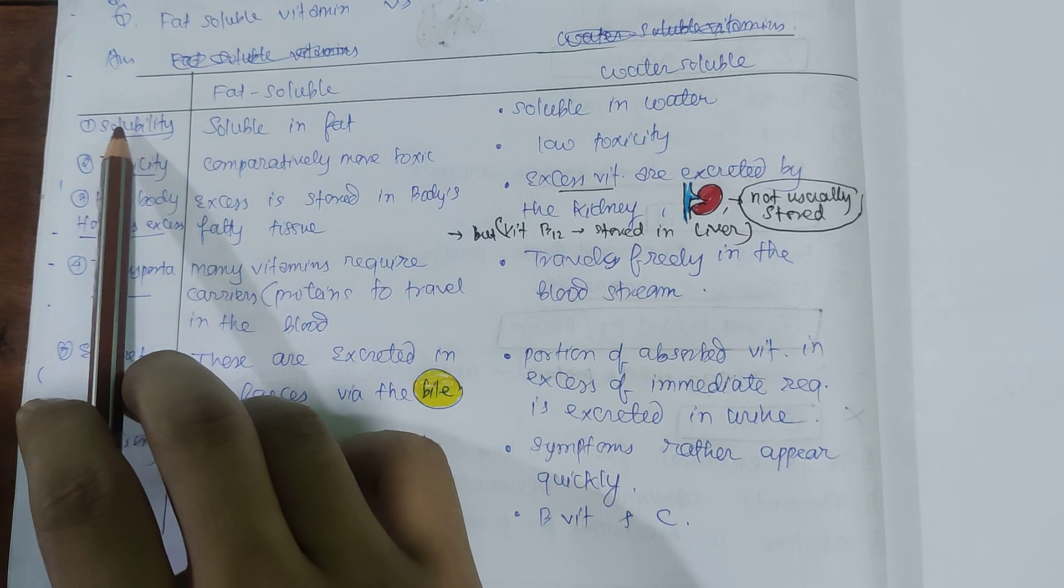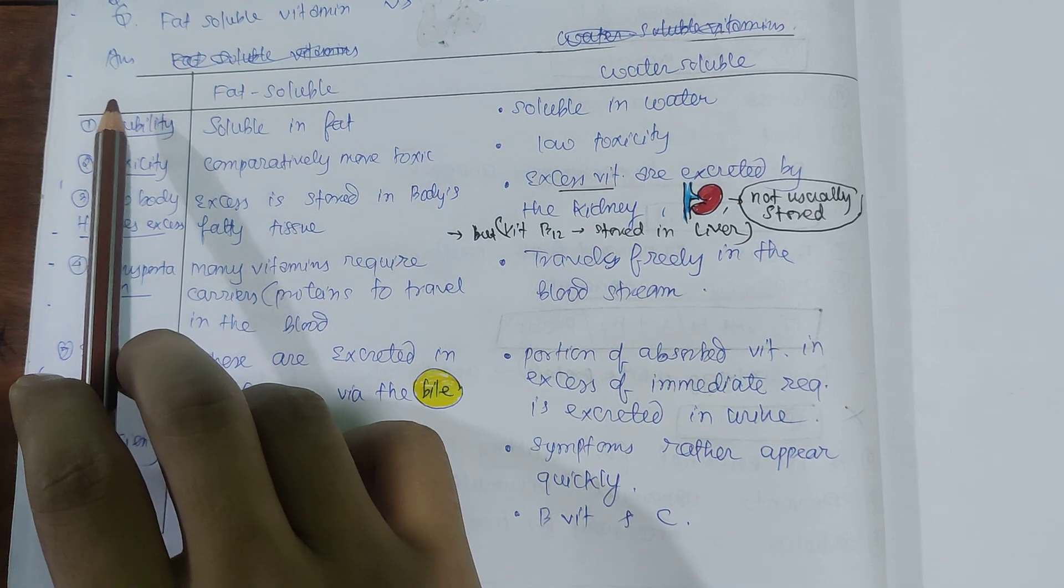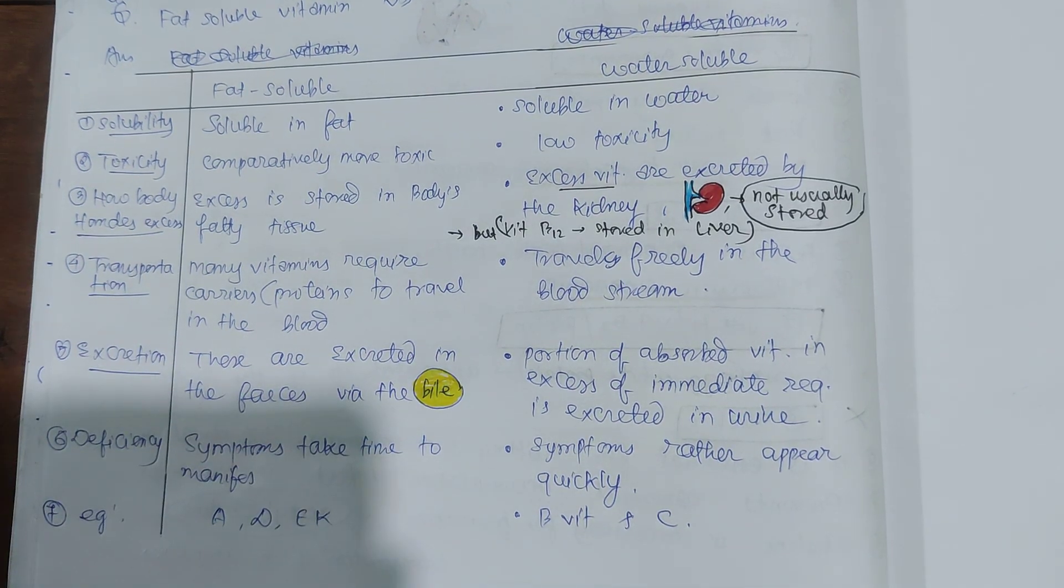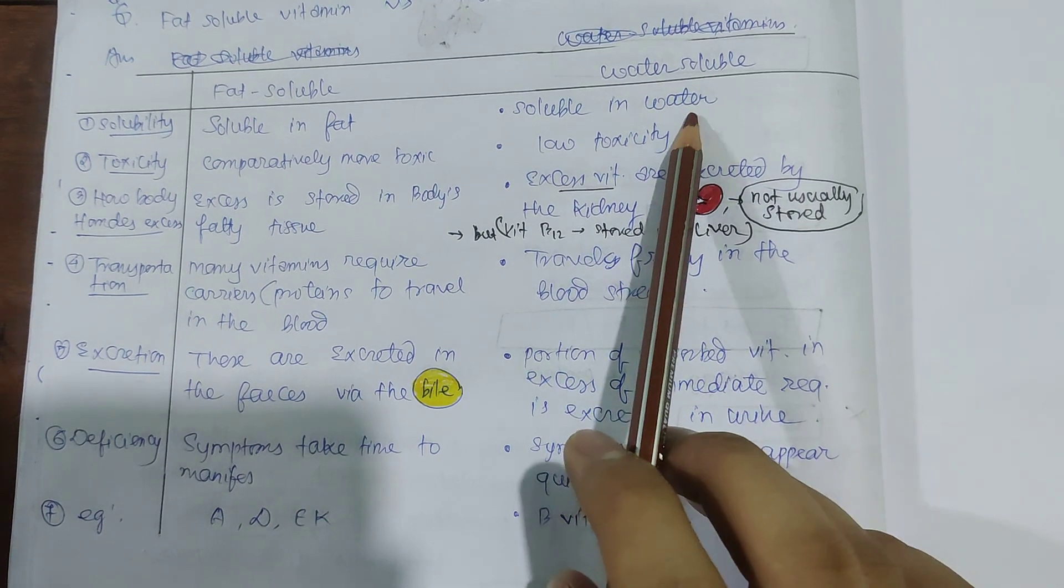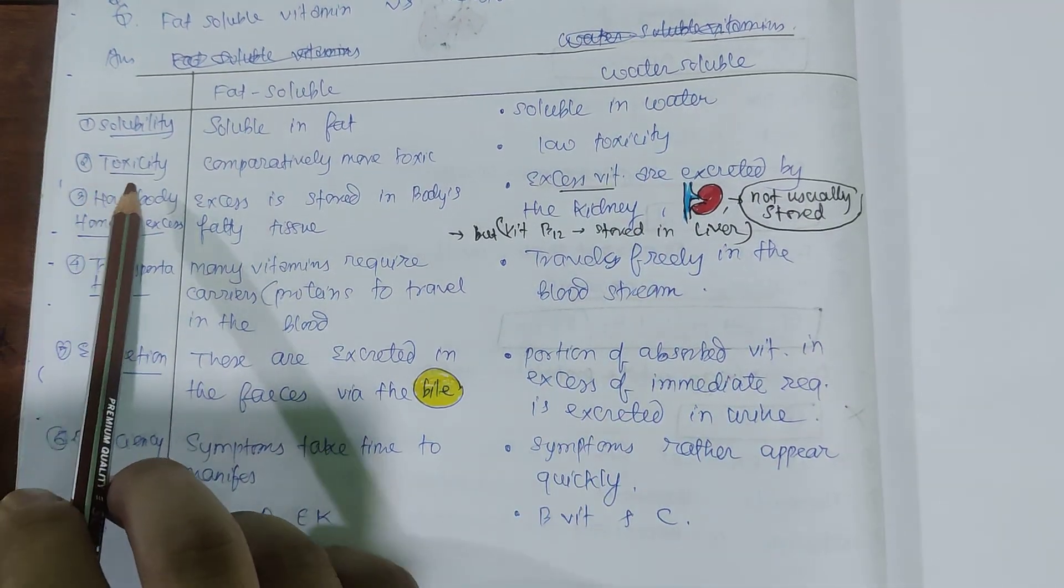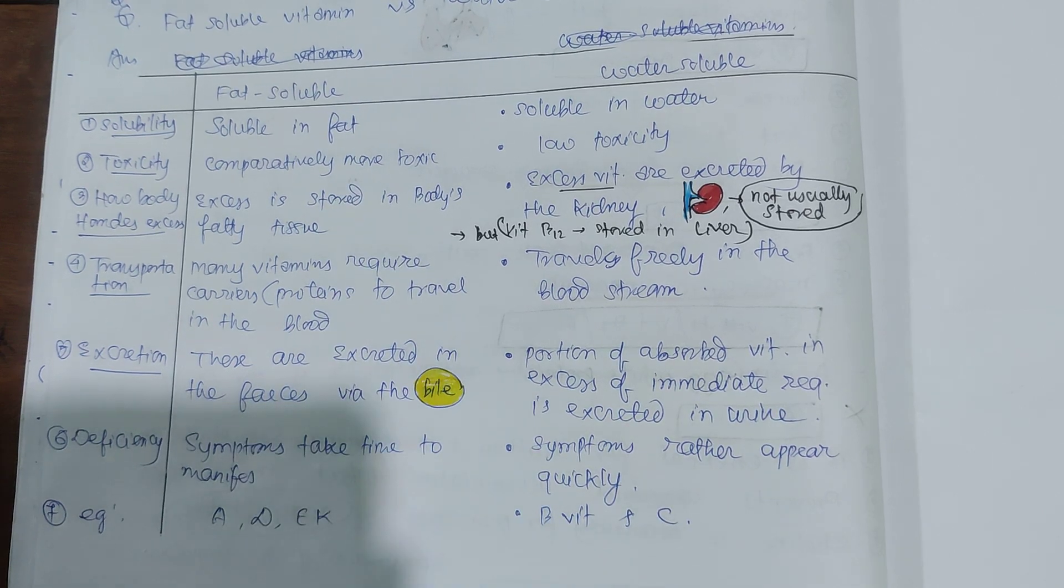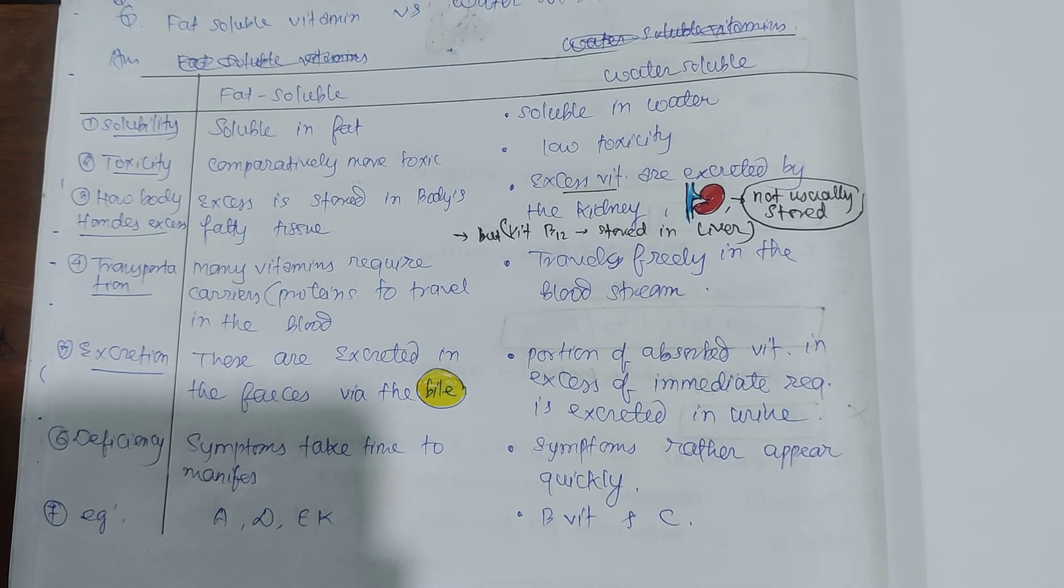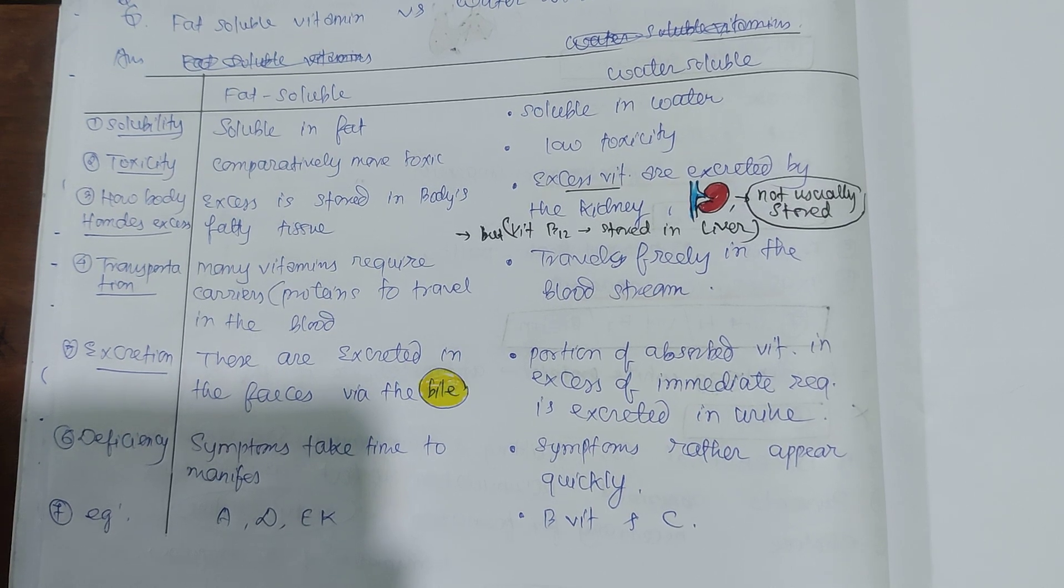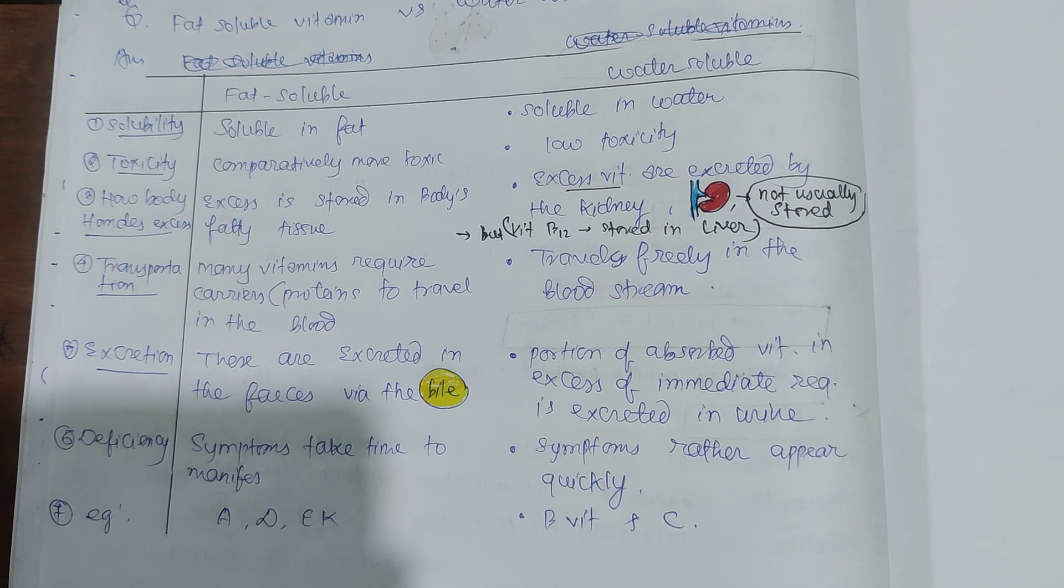Solubility: Fat-soluble vitamins are soluble in fat, and water-soluble vitamins are soluble in water. Toxicity: Fat-soluble vitamins (A, D, E, K) are comparatively more toxic, but water-soluble vitamins are less toxic.